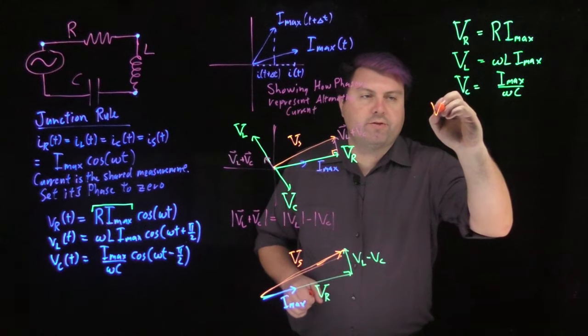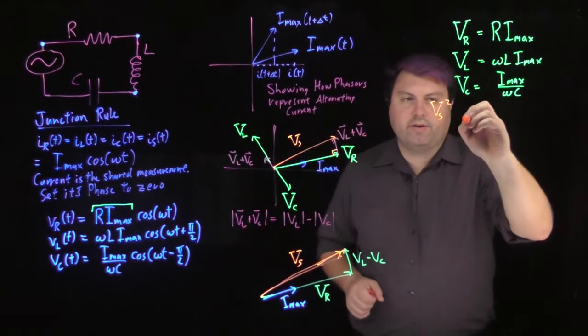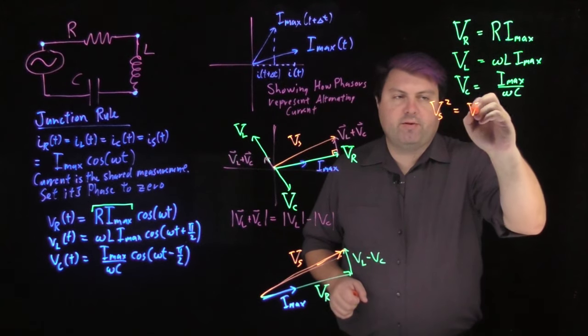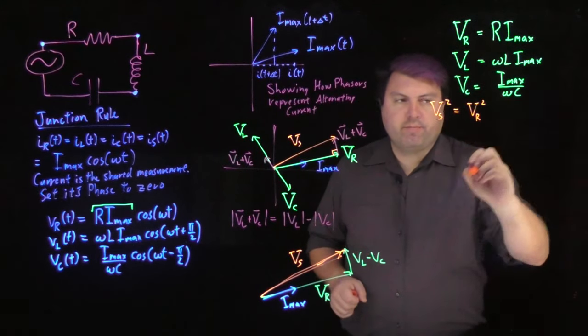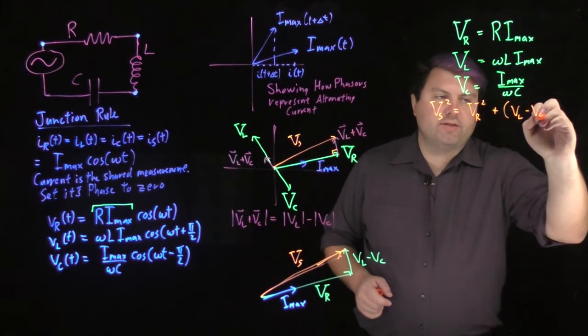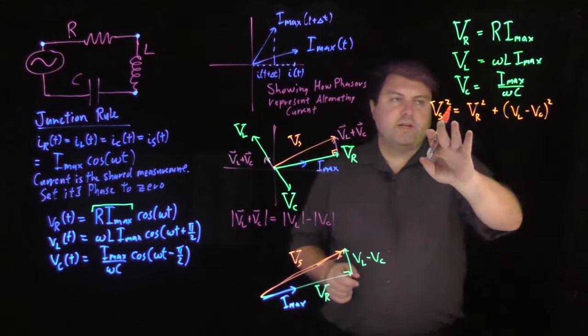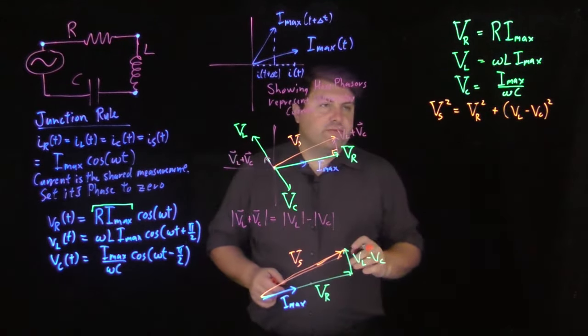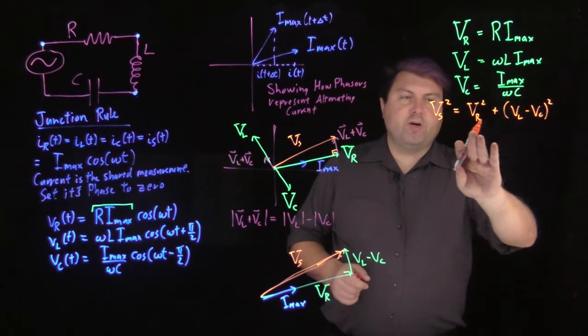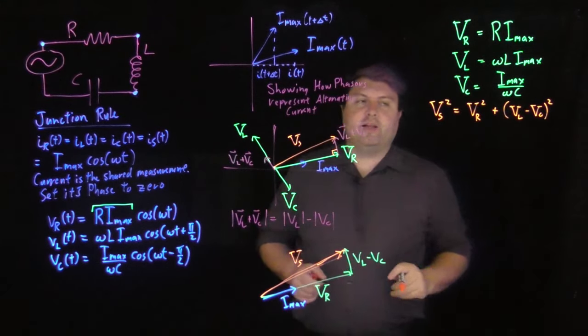So the voltage of our source maximum squared, hypotenuse squared, is equal to capital V sub R squared plus the magnitude of V sub L minus V sub C quantity squared. This is the voltage dropped by all of these different elements. So at this moment, if we don't have any of these certain elements, we just erase that element.